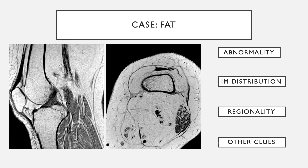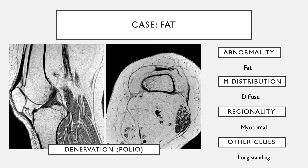In another case, the lower thigh musculature is completely fatty infiltrated with no muscle remaining — just tendon. The calf musculature looks intact. This is diffuse fatty infiltration involving a particular myotomal segment — the lower thigh — that has been longstanding. This is an example of denervation from poliomyelitis.